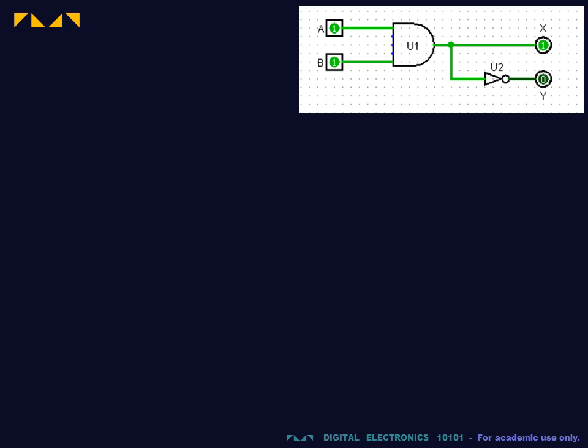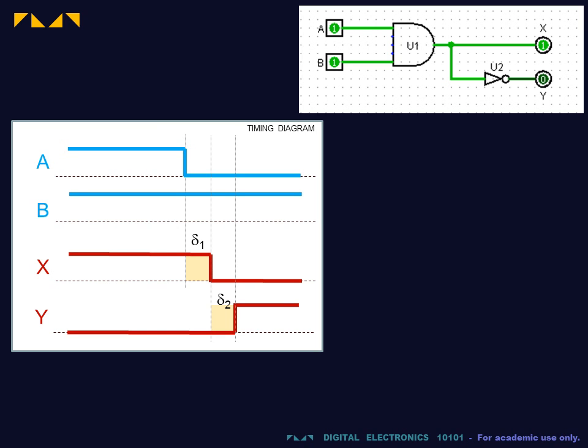While this delay is small for many applications, it is compounded when devices occur one after the other. In this case, following the transition of the input A, the delay in the transition of output Y is the sum of the delay delta 1 in the AND gate and the delay delta 2 of the NOT gate.